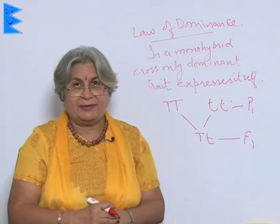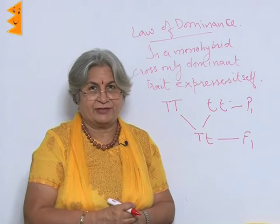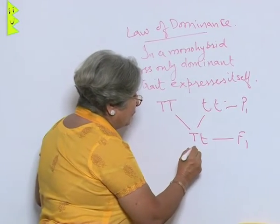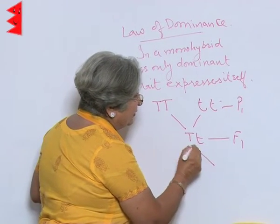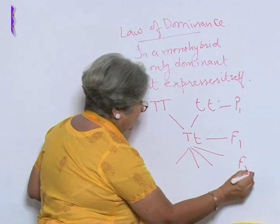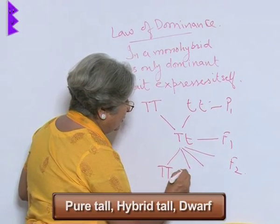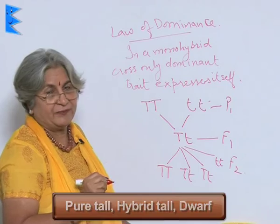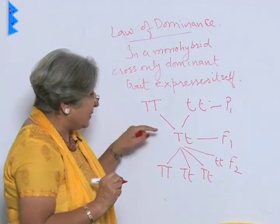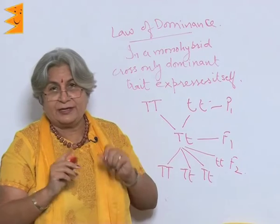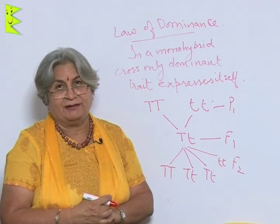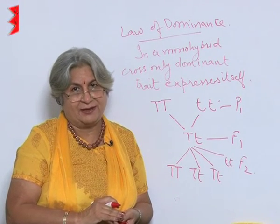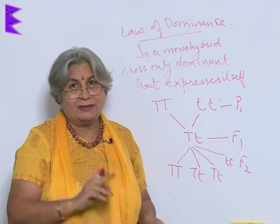Another thing happened in the F2 generation. When we self-pollinated the F1 plants, in the F2 generation we had three types of plants: pure tall, hybrid tall, and dwarf. This means that the dwarfness, though it did not express itself in the F1 generation, it did not disappear — it was very much there. It had been suppressed by the tallness, but it did not disappear.